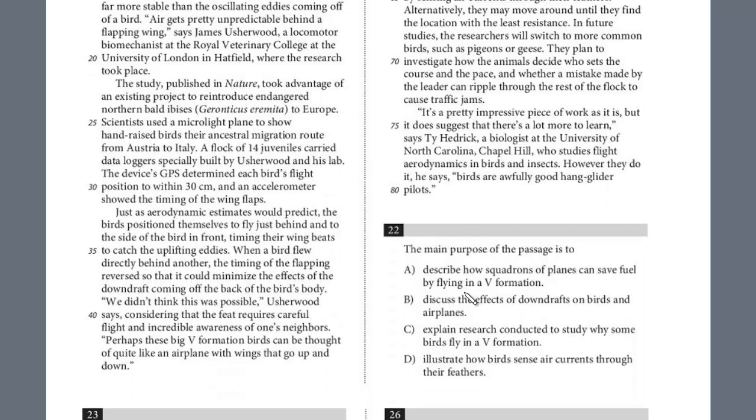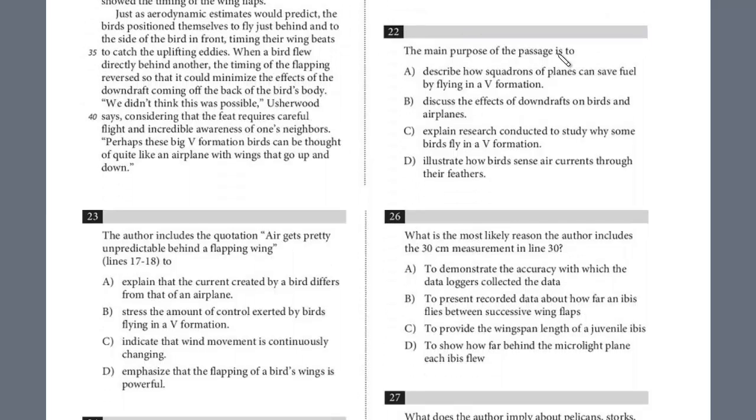Let's take a look at the questions. The first one, 22, asks about the main purpose of the passage. This is a general question about the whole passage. If you're unsure after reading it the first time, you may want to return. You're always looking for broad, general language. Is the whole passage about describing how squadrons and planes can save fuel? This is not about planes, it's about birds. This is certainly not what this passage is about. Explain research conducted to study why some birds fly into V-Formation - it's pretty much stated in that very first sentence. Definitely, the answer is C.